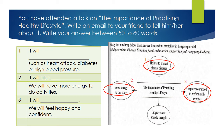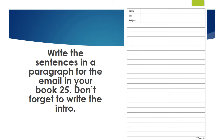Number three: it will improve our mood to perform daily activities. For the supporting detail — if it improves our mood, we will feel happy and confident. So you have to write these sentences in a paragraph for the email in your book. Don't forget to write the intro: 'Dear Aiman, I want to tell you about the importance of practicing a healthy lifestyle.' Write one paragraph, then close with 'That's all from me, thank you' and your name. Don't forget the 'To,' 'From,' and 'Subject' fields — the subject is the importance of practicing a healthy lifestyle.